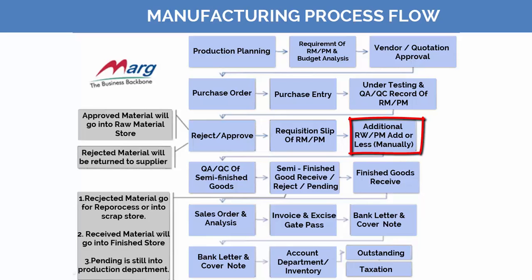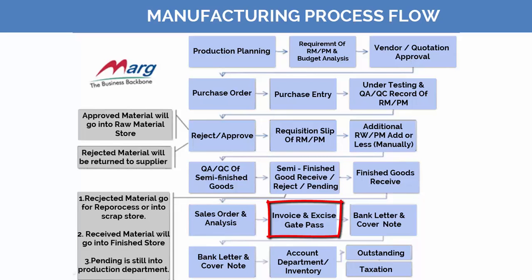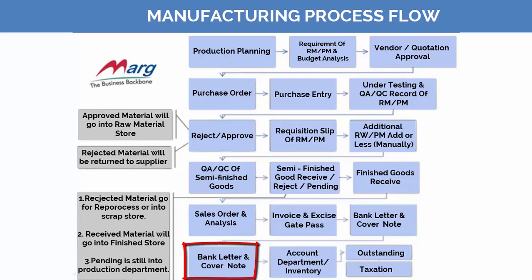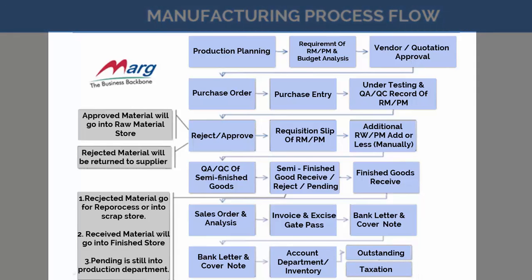If in the requisition slip some raw materials or packing materials are yet to be added, you can do the addition. After semi-finished goods are generated in the production department, you have two options: whether to send those materials for testing or not. After testing, some might be rejected and some pending. Then we receive finished goods, generate a sale order, invoice, excise and gate passing, then a bank letter and cover note, and finally the entry is done in the accounts department.